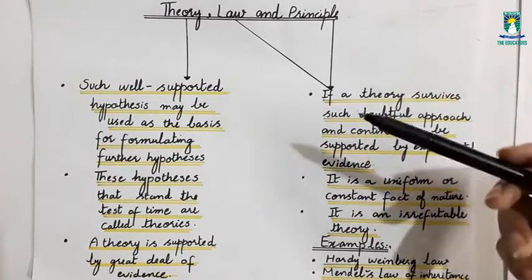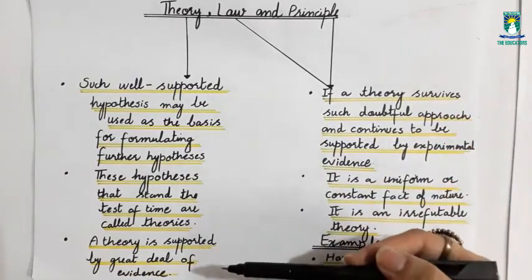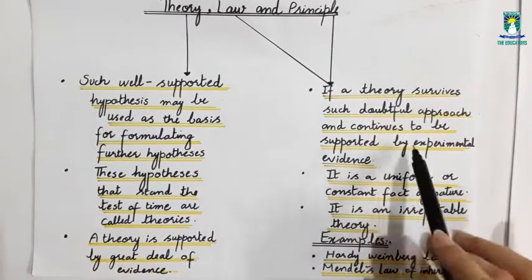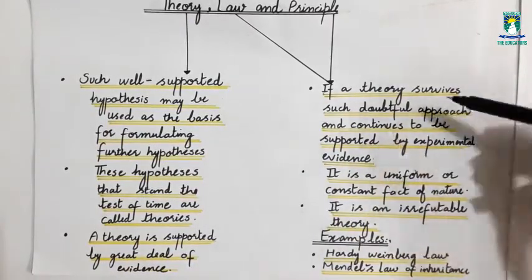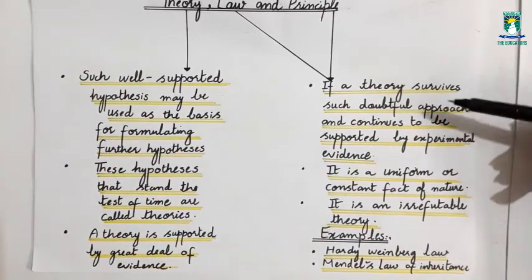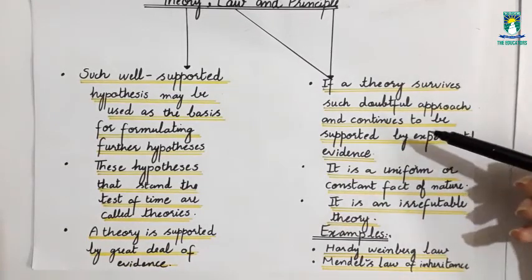Many biologists make efforts to reject the theories. But if a theory survives such a doubtful approach and continues to be supported by experimental evidence, if the theory survives further experiments and doesn't get rejected, then what will it become? It becomes law, it becomes principle.